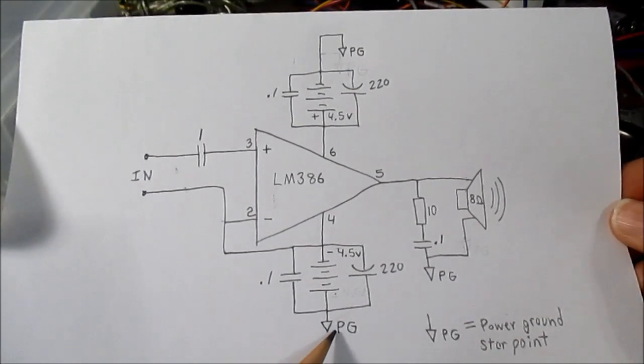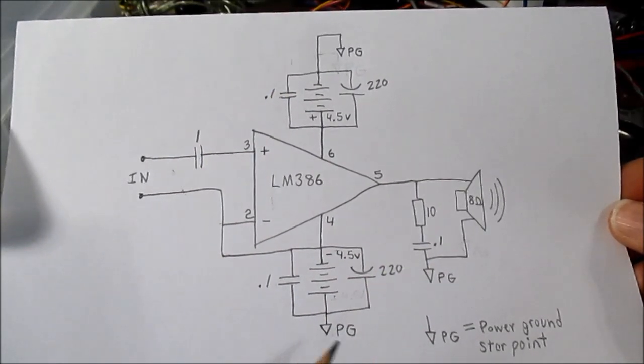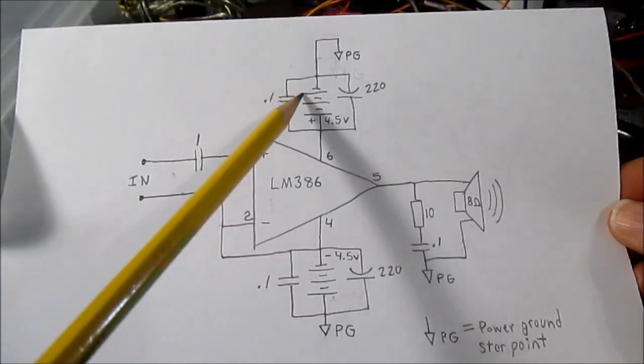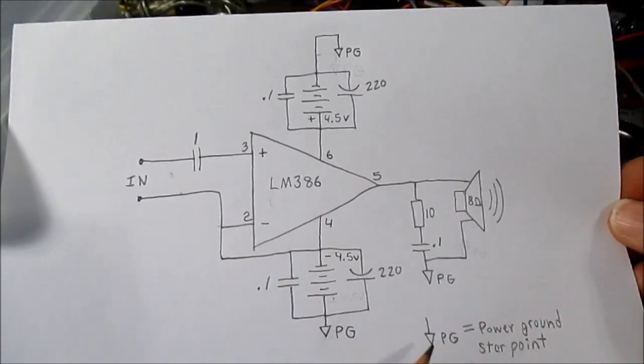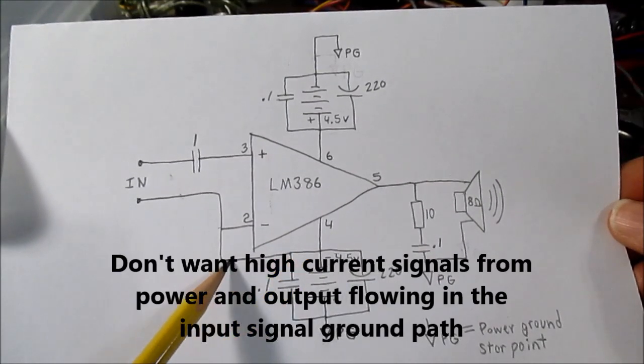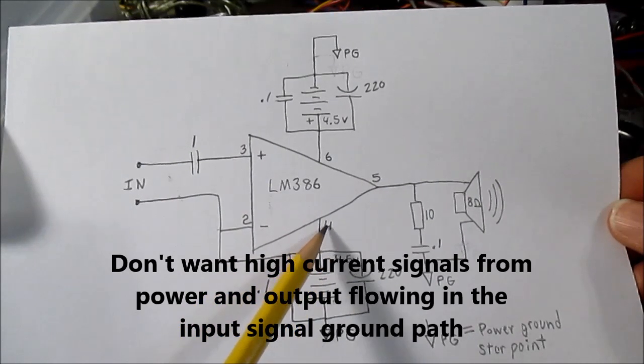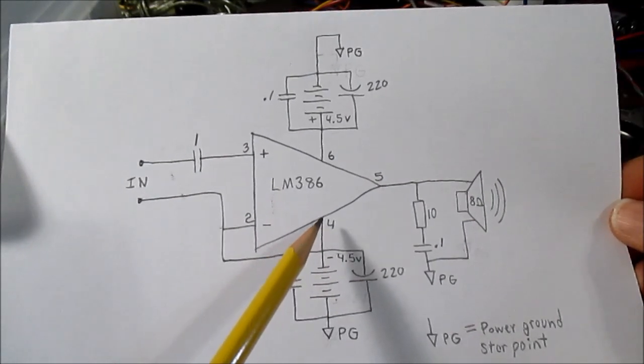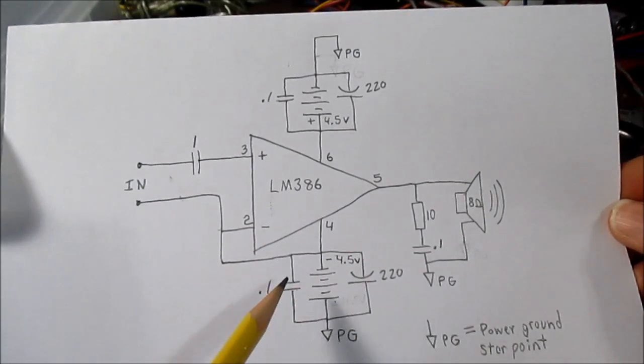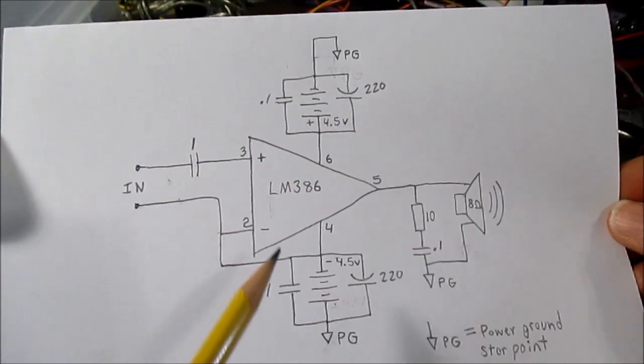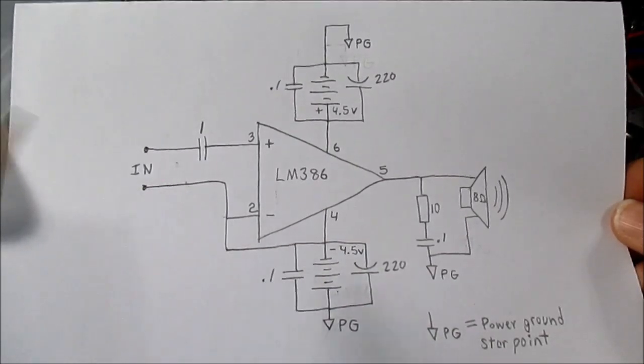And these PG ground points are the star ground for the power type. You know, the supply and the output ground. You don't want signals flowing in that. And of course it doesn't because we're returning to the pin four, which is the negative supply voltage in this case. And we're well decoupled with our power supply. So it's not going to be an issue with the signal and power grounds.